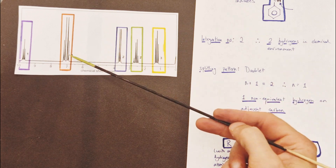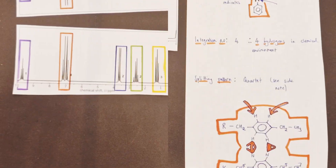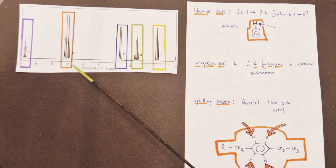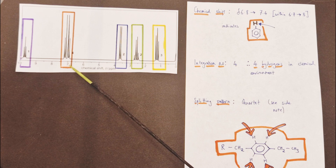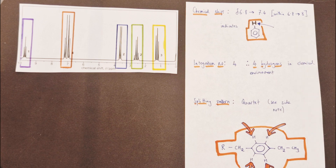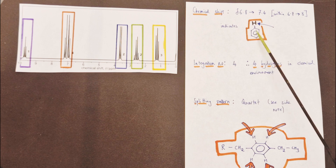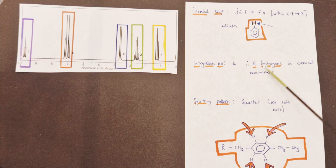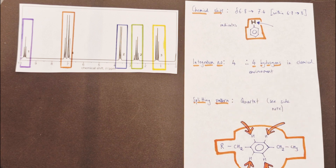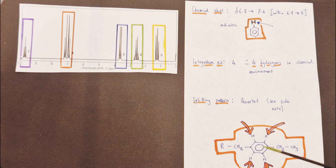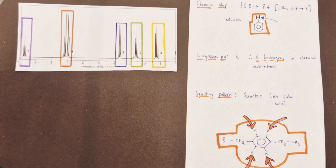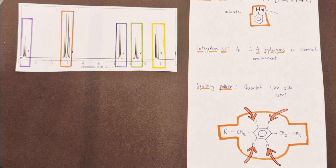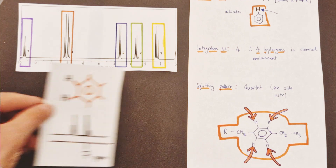Now let's look at the aromatic peak at 7 ppm and why it's aromatic. This appears to be a quartet at around 7 parts per million. The chemical shift is between 6.8 and 7.4 ppm, within the 6.7 to 8 ppm range in the data booklet, which is indicative of protons directly bonded to the carbons of an aromatic ring structure. The integration number is 4, implying four hydrogens in this chemical environment, and the splitting pattern is a quartet. For aromatic structures, the N+1 rule becomes more complex due to the delocalized ring structure itself.